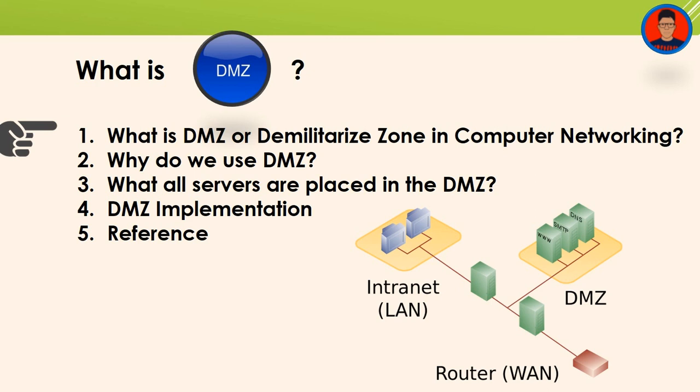On the diagram you can see a separate intranet LAN between the DMZ and the router. We have three zones: the trusted zone, the local area network (LAN), and the DMZ zone.